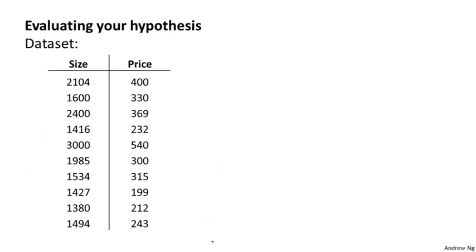The standard way to evaluate a learned hypothesis is as follows. Suppose we have a data set like this. Here, I've just shown 10 training examples, but of course, usually we may have dozens or hundreds or maybe thousands of training examples. In order to make sure we can evaluate our hypothesis, what we're going to do is split the data we have into two portions.